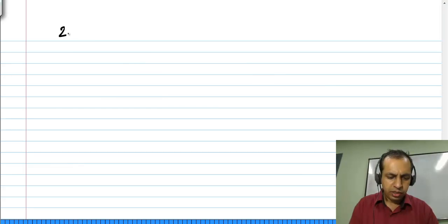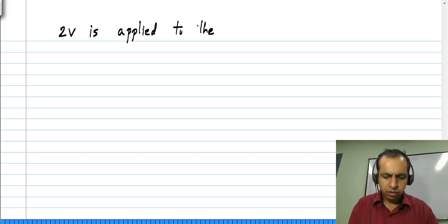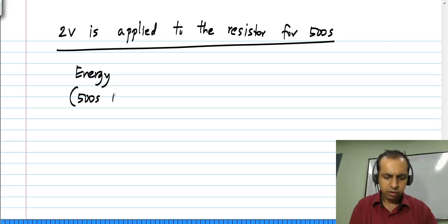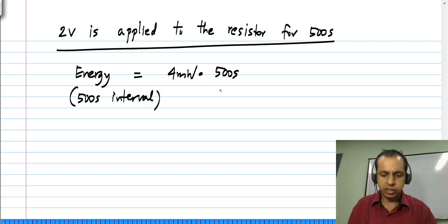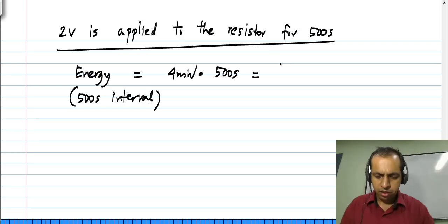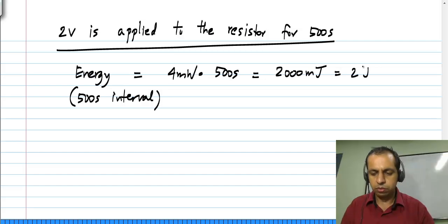Now, let us say this 2 volts is applied to the resistor for 500 seconds. The energy delivered in this 500-second interval is the power — which is 4 milliwatts — times the time, which is 500 seconds. We have applied a constant voltage, so we just multiply the power by the time interval. If the voltage were time varying, the power would be time varying and you would have to integrate it over the time interval. This turns out to be 2000 millijoules, or 2 joules of energy.